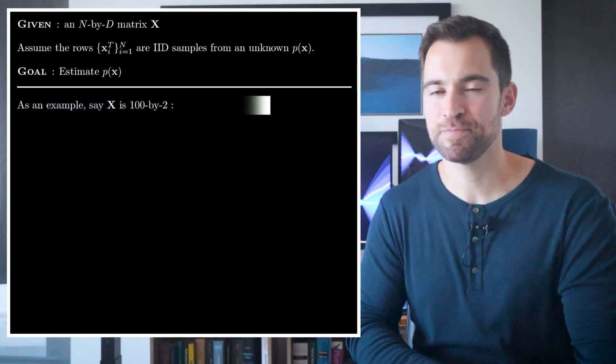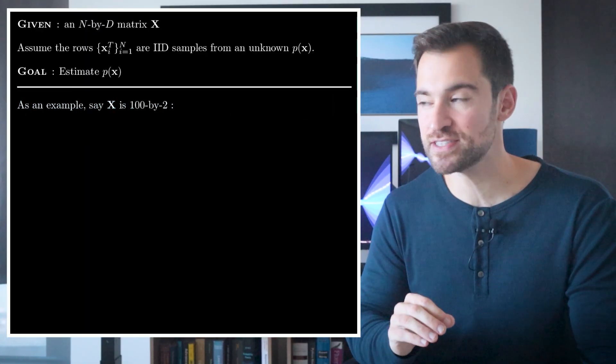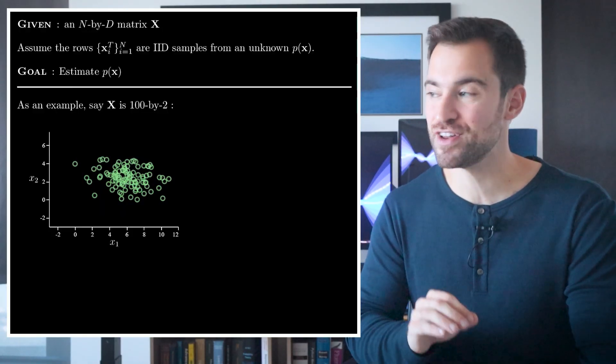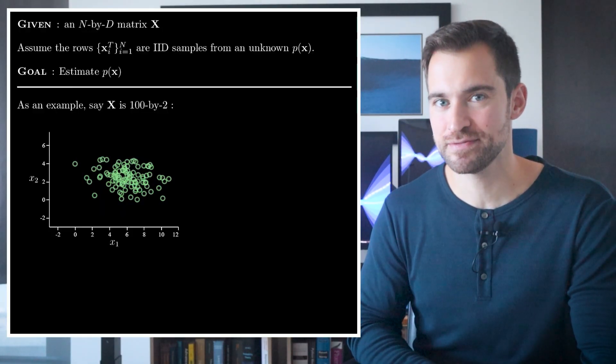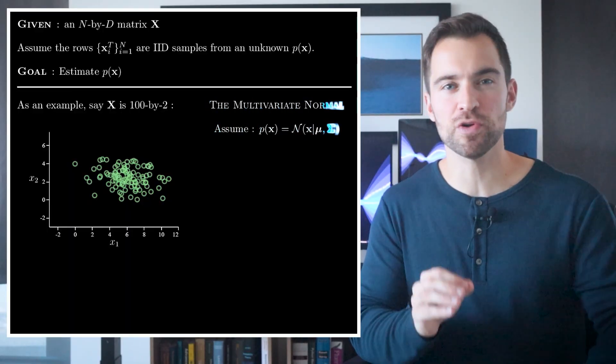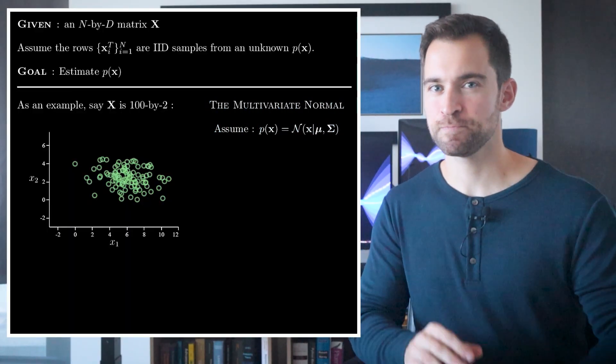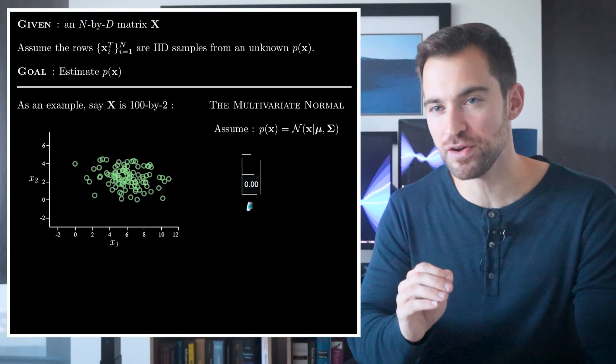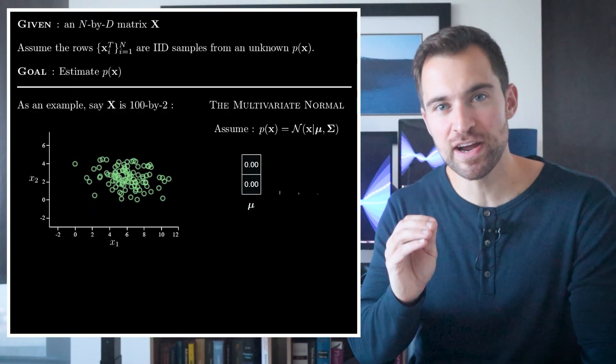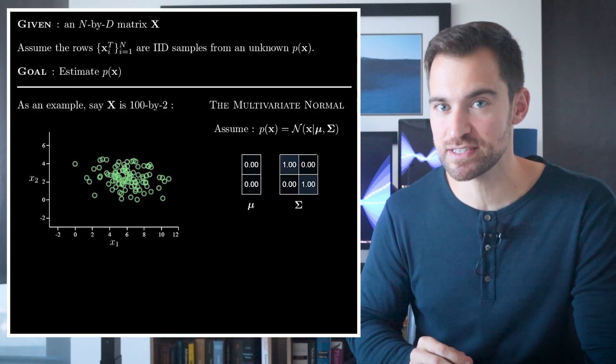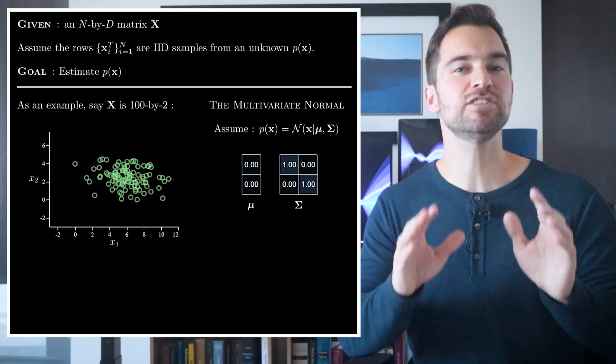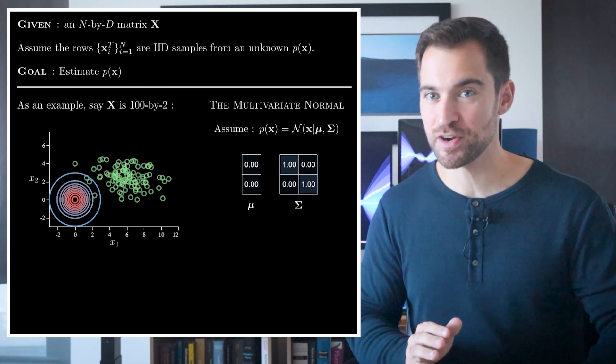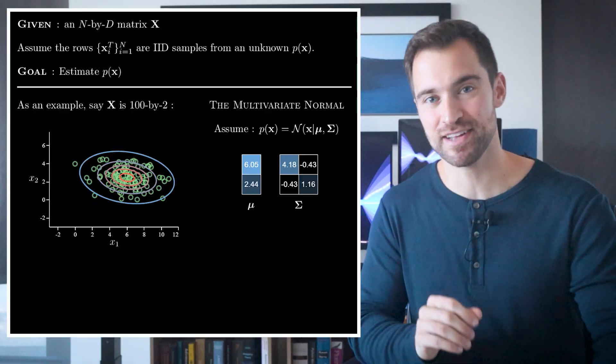Let's consider an example. Let's say X is a 100 by 2 matrix, which can be pictured like this. Now, we need to come up with a distribution that matches these samples. Looking at this, the multivariate normal looks like a reasonable choice. If you don't recall, this distribution is parametrized by a length two mean vector mu and a covariance matrix sigma, which is a 2 by 2 matrix.